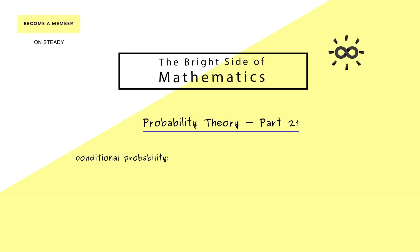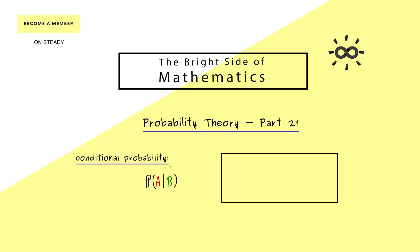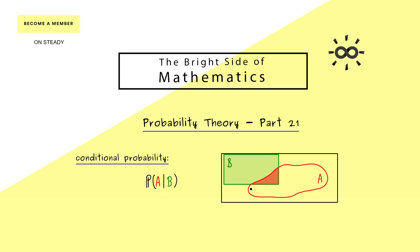This video is about conditional expectation, so let's first recall the notion of conditional probability. We had a very nice notation: we wrote P of A given B, where B is called the condition. We had a nice picture: here we have the whole sample space omega and inside we find the subset B. The idea of the conditional probability is that we only want to calculate inside this set B, which means for P(A|B) only the intersection of A and B is important.